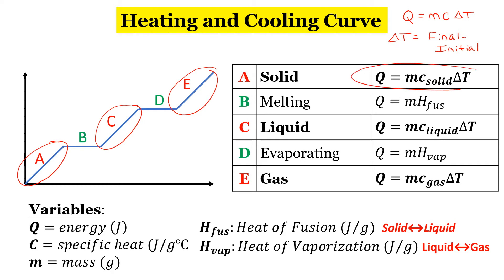If you look here, any time we are in the solid state, the liquid state, or the gas state, we're going to be using the Q equals mc delta T equation. The C — the specific heat value — is going to be slightly different between the solid, liquid, and gas. Those values will be given to you.